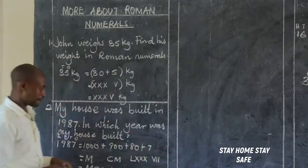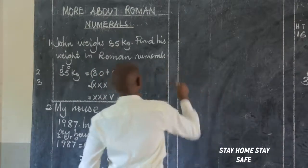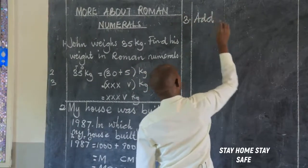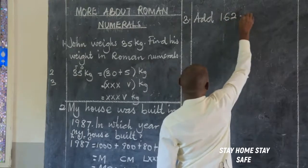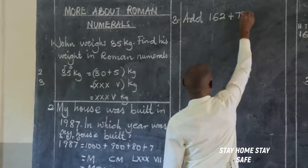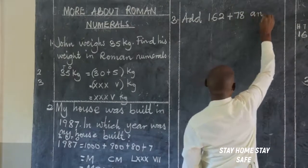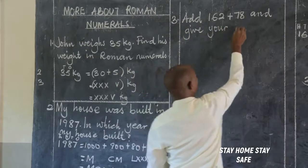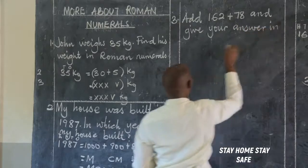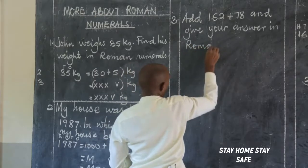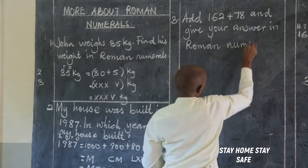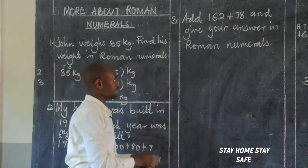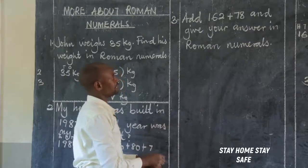Let's have another example. Add 162 plus 78 and give your answer in Roman numerals.